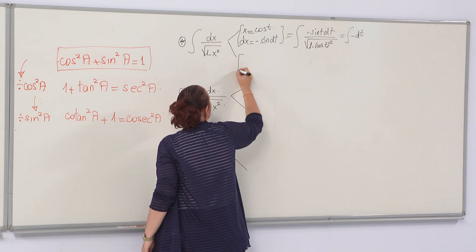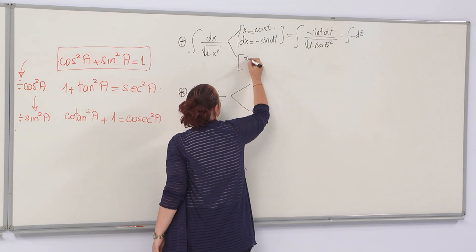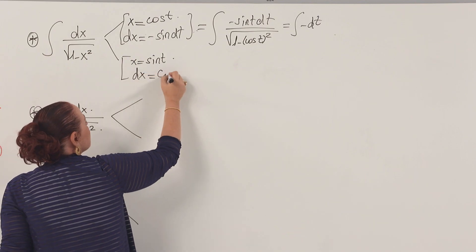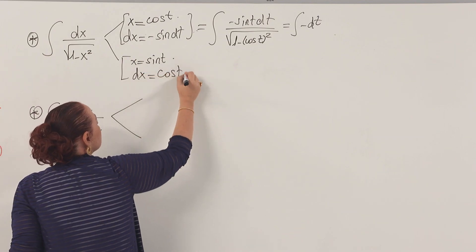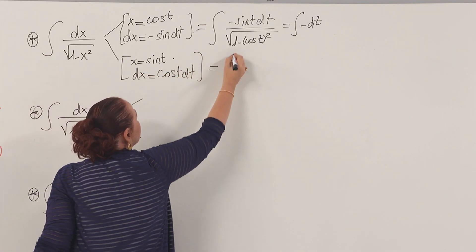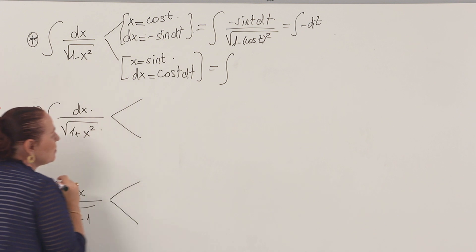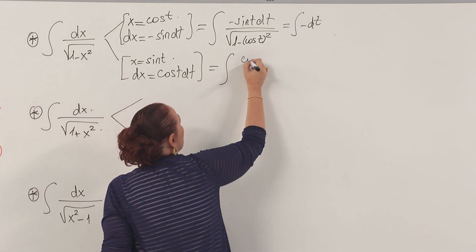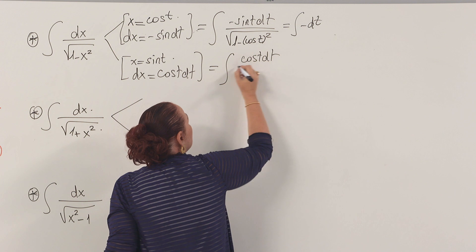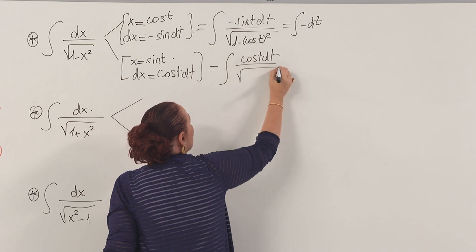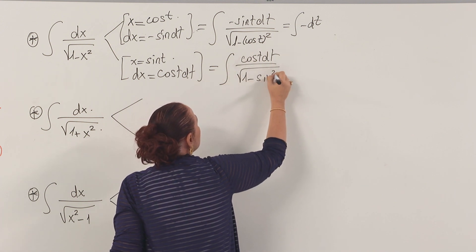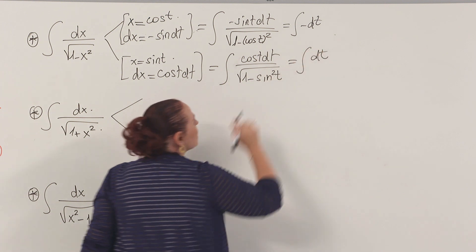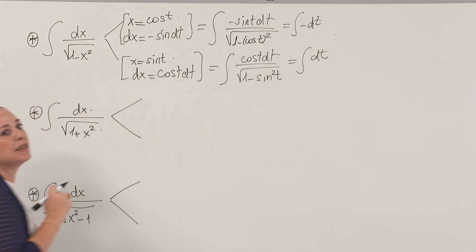Similarly, if you use the sine substitution and follow the same steps, in the numerator you get cos(t) dt, in the denominator 1 − sin²(t), and after the eliminations you are left with dt.